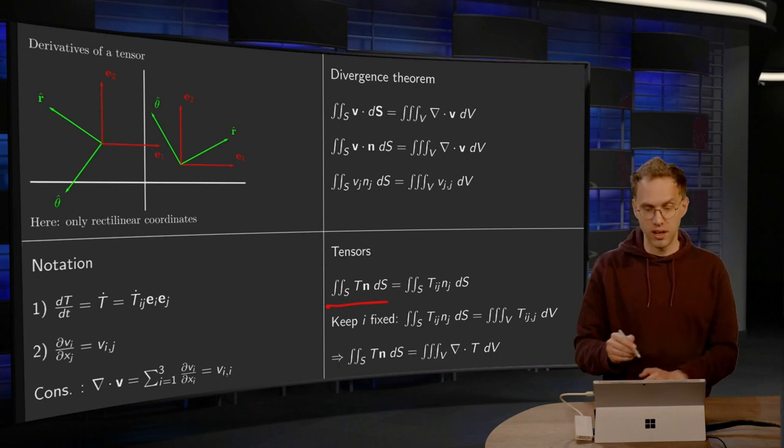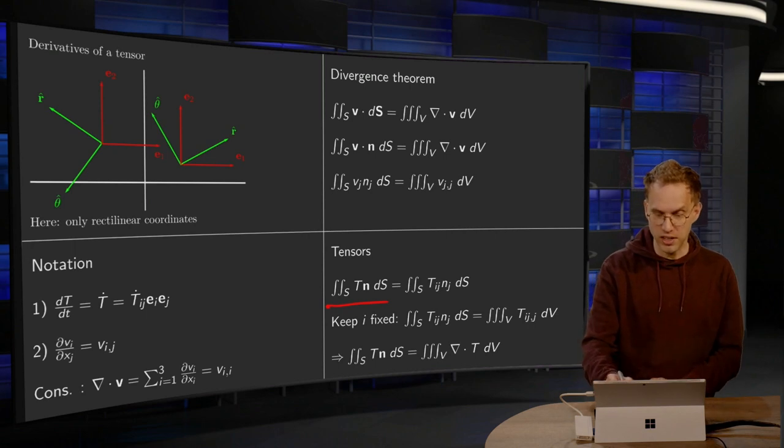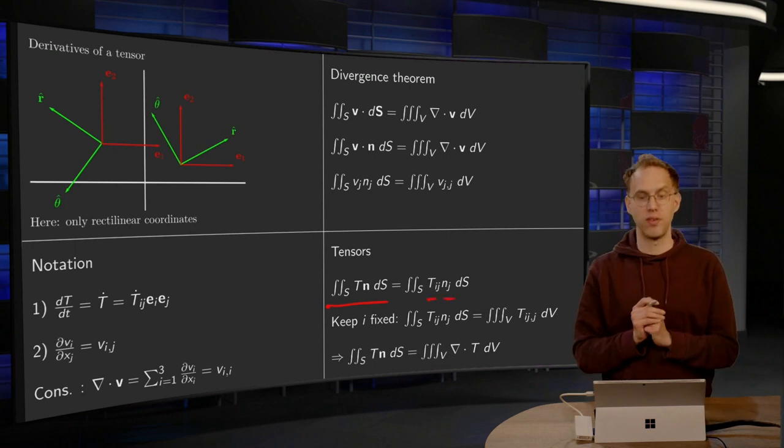Now of course we can rewrite it as T_ij times n_j. We have done nothing there.